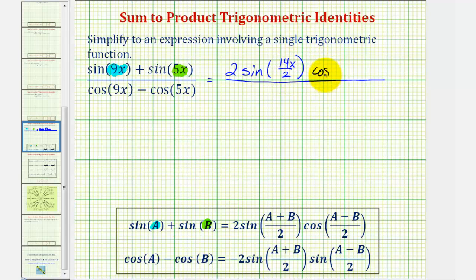times cosine of (A minus B) divided by two, which would be 9x minus 5x divided by two. 9x minus 5x is 4x, so we have 4x divided by two here.